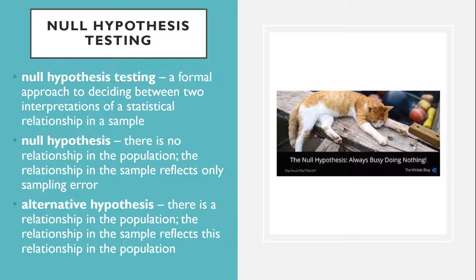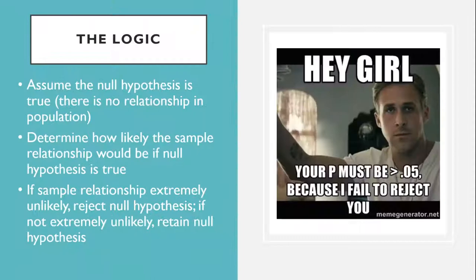The other interpretation is called the alternative hypothesis, often symbolized as H₁. This is the idea that there's a relationship in the population, and that the relationship in the sample reflects this relationship in the population. Every statistical relationship in a sample can be interpreted in either of these two ways — it might have occurred by chance, or it might reflect a relationship in the population. So researchers need a way to decide between these two. Although there are many specific null hypothesis testing techniques, they are all based on the same general logic.